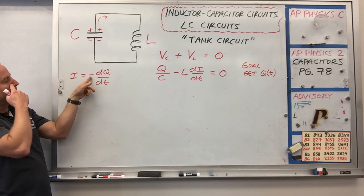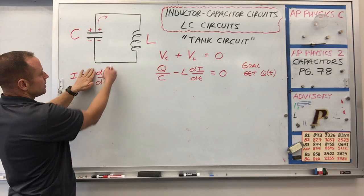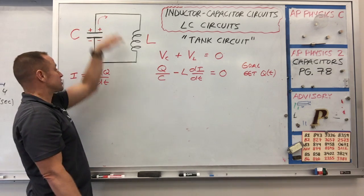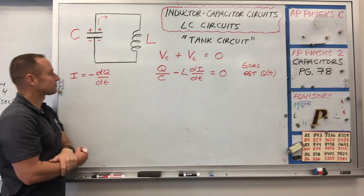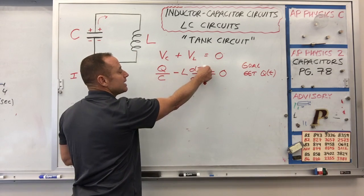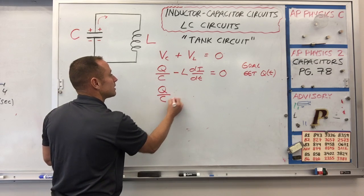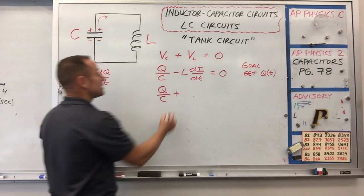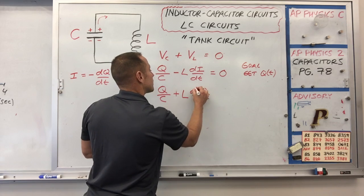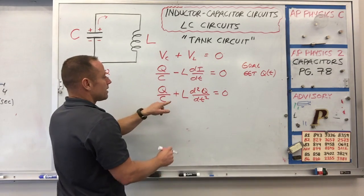The reason there's a negative sign is as the capacitor dumps charge, its dQ/dt is going to be negative because it's losing charge. So just to make the current a positive quantity, we put a negative sign in front: current equals minus dQ/dt. Substituting this for current, since we're taking d/dt of I, this will become a second derivative. What we get is Q over C plus L times d²Q/dt² equals zero.